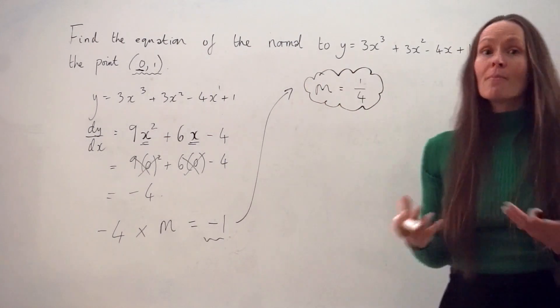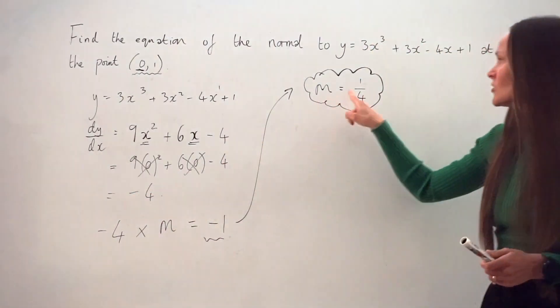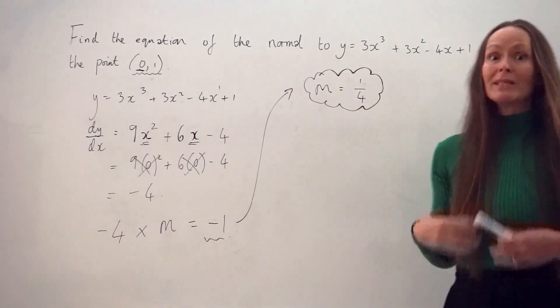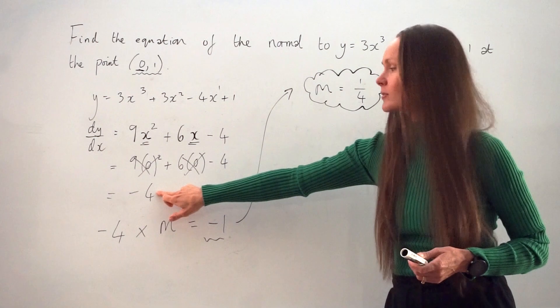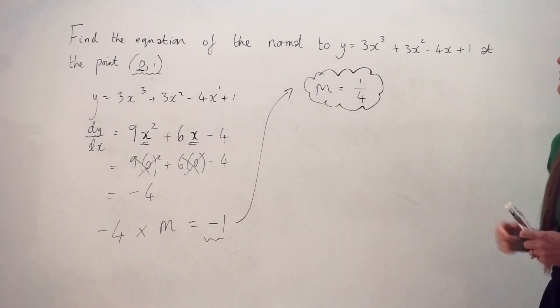An easy way to remember how to work out the gradient is this sign will always change when comparing the two gradients. So if this one's negative, this one will always be positive and vice versa. And if you like, you're switching it upside down. So 4 becomes 1 over 4. So that's the gradient of our normal.